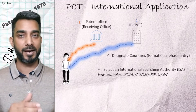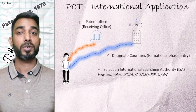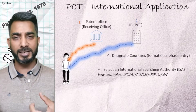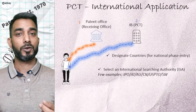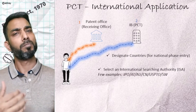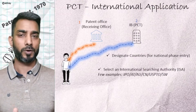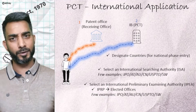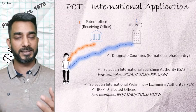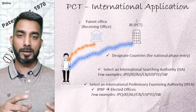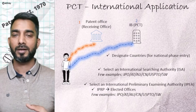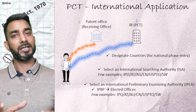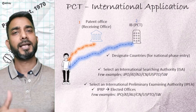The report created by the ISA is called the International Search Report, or ISR. Examples of such patent offices include the USPTO, EPO, Chinese Patent Office, Indian Patent Office, and Austrian Patent Office. You are also provided with the option of selecting an International Preliminary Examining Authority, IPEA — a patent office that you can interact with to discuss the ISR, make amendments or changes to your claims, and obtain a favorable report for your invention. This is an optional stage; it's up to you whether you want to avail this service.